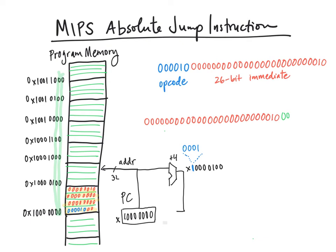And this is how we construct a 32-bit address out of an initial 26-bit immediate.